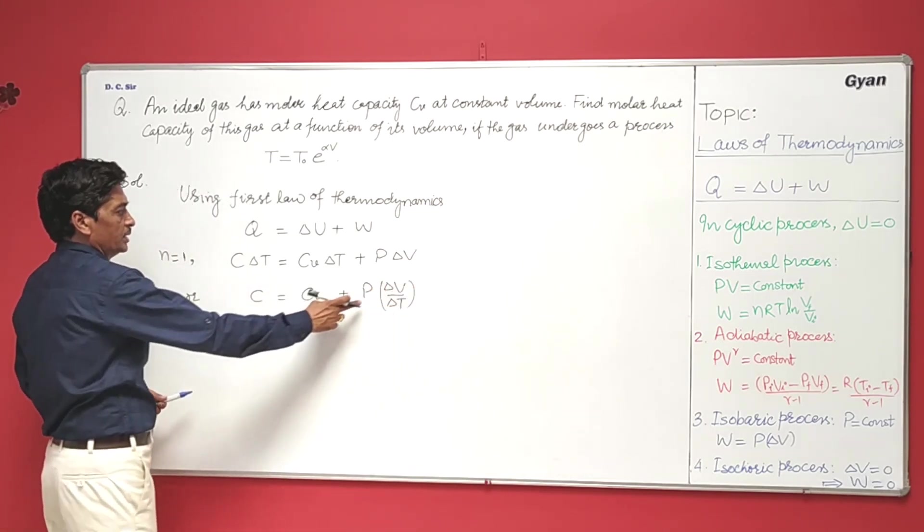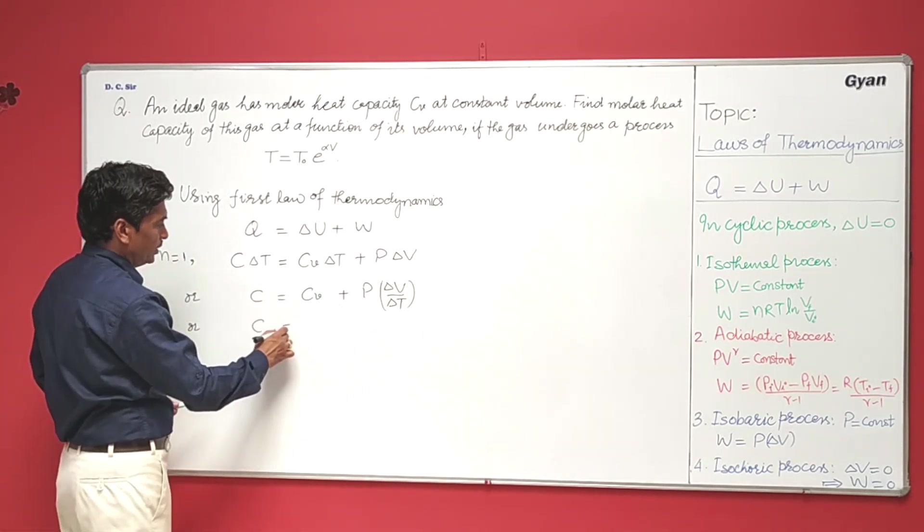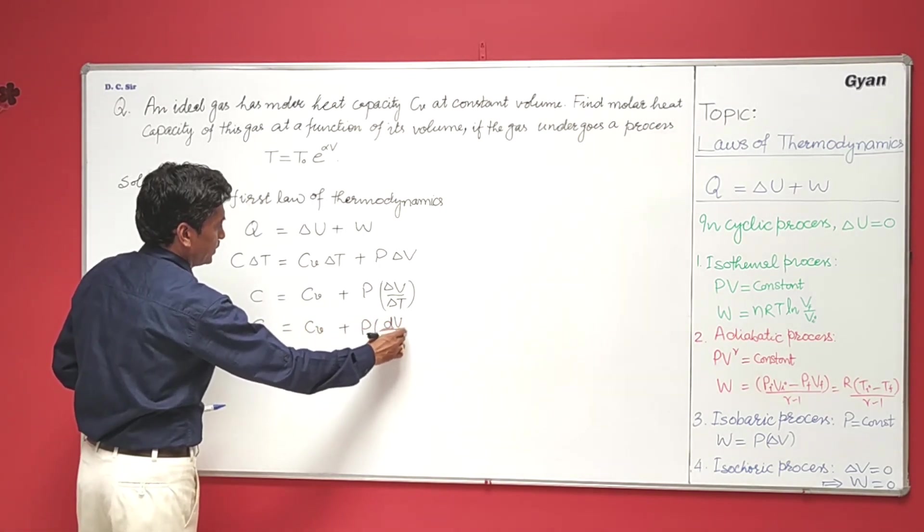In terms of derivatives this can be written as dV over dT. So we can write C equals Cv plus P dV over dT.